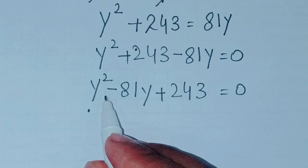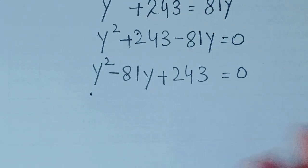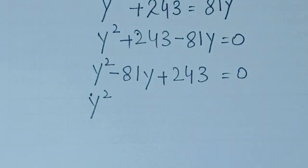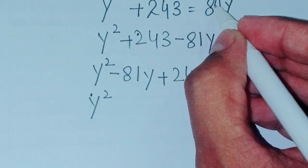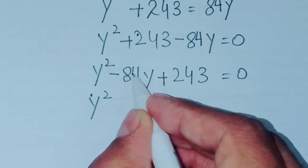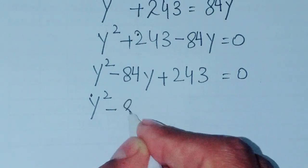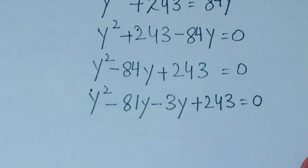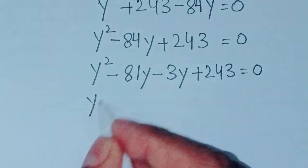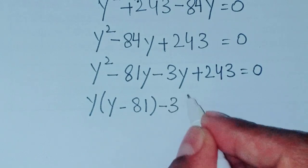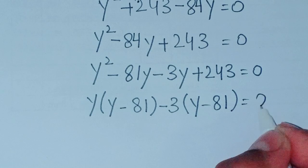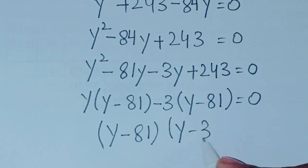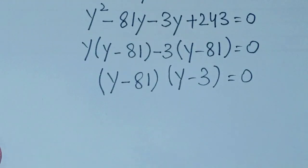We apply factorization. We split the middle term: y squared minus 81y minus 3y plus 243 equals 0. Taking y common from the first two terms gives y(y minus 81), and taking minus 3 common from the last two gives minus 3(y minus 81). So (y minus 81)(y minus 3) equals 0.